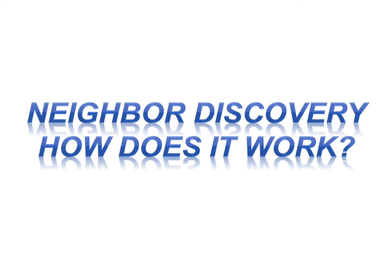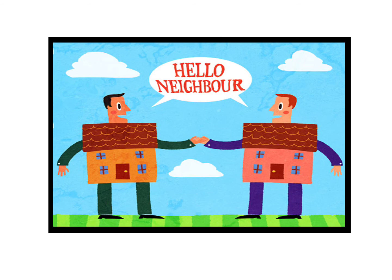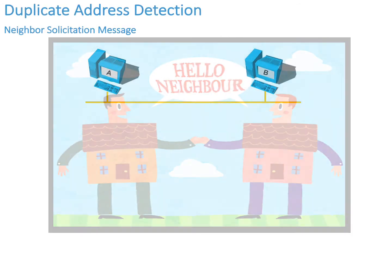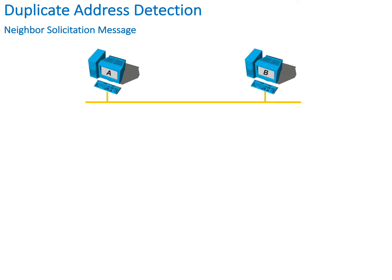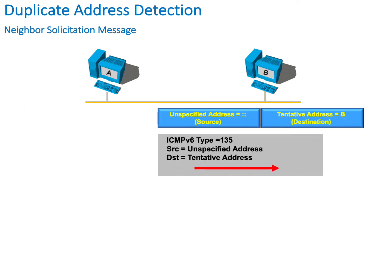So neighbor discovery — how does it really work? How do we find our neighbors? To discover our neighbors we have to go through a number of steps. The first step is to determine whether we have a truly unique address. To start this first step, host A is going to send out a neighbor solicitation using as a destination the address that host A ultimately wants to use. This is known as a tentative address. Hopefully no one will respond if the address is truly unique. The source address of host A will be set to a null field known as an unspecified address.